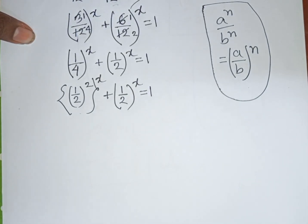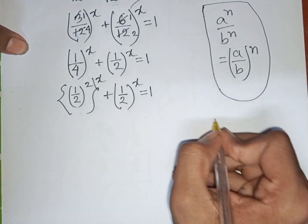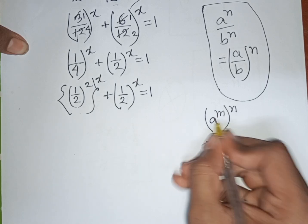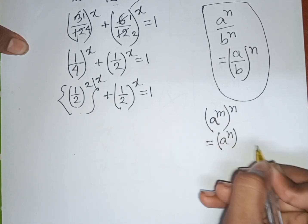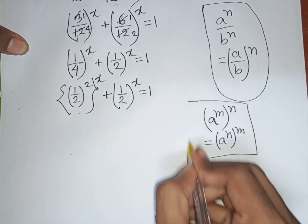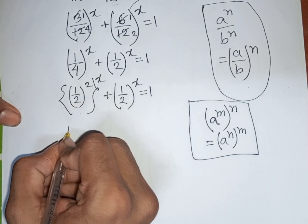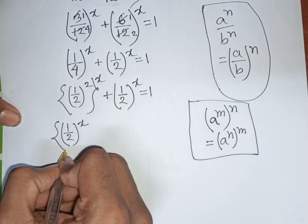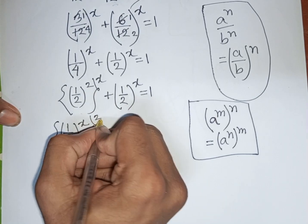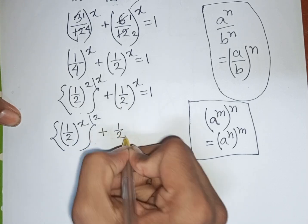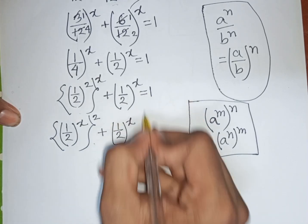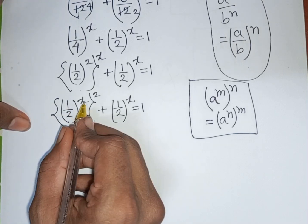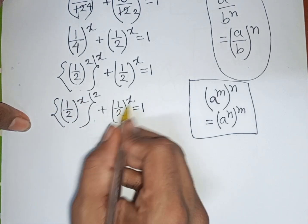Now we apply the rule (a^m)^n = (a^n)^m. Since 1/4 = (1/2)^2, the first term (1/4)^x can be rewritten as ((1/2)^2)^x = ((1/2)^x)^2. So the equation becomes ((1/2)^x)^2 + (1/2)^x = 1.